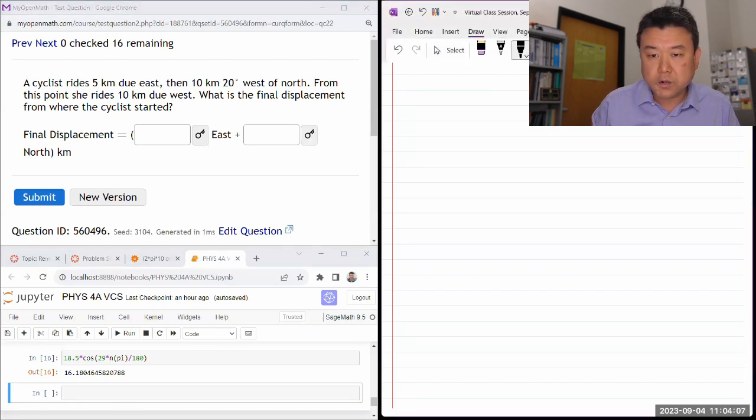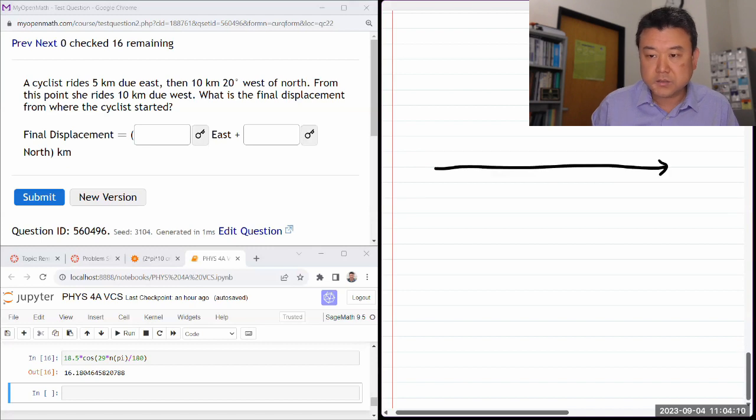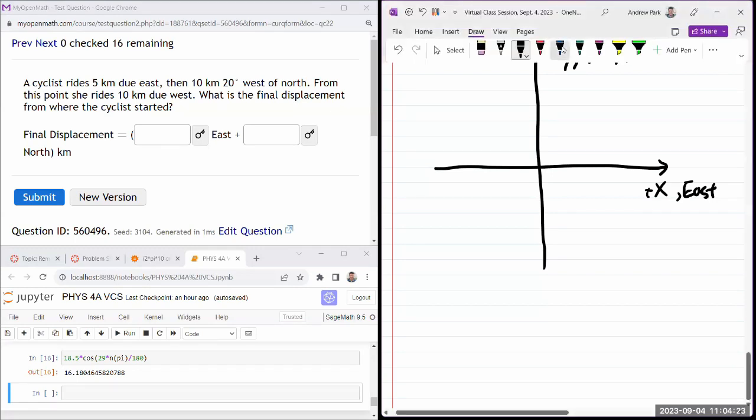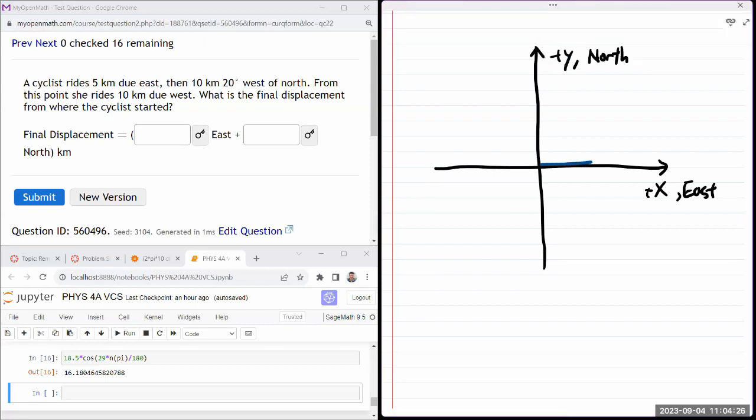So I'm going to work with these cardinal directions. I'll just say this plus X is also my east. And this plus Y is also my north. So it says a cyclist rides 5 kilometers due east and then 10 kilometers 20 degrees west of the north. So this is northward. So 20 degrees west of like 10 kilometers.